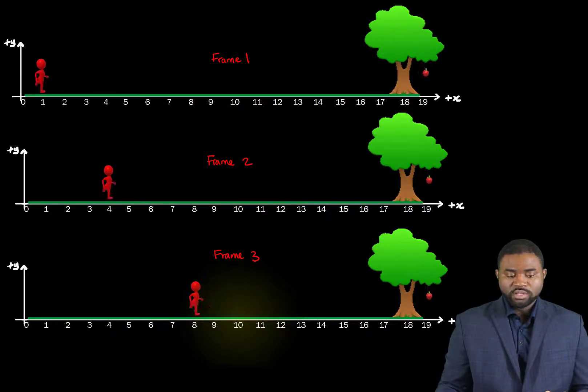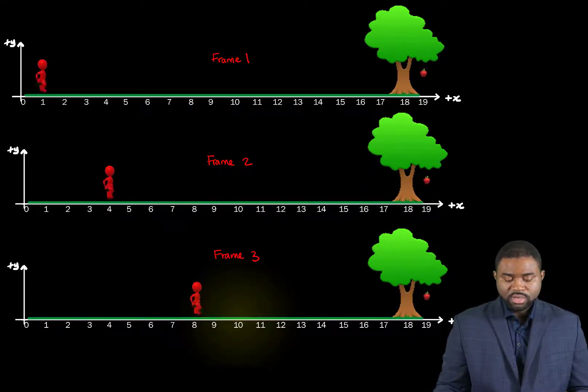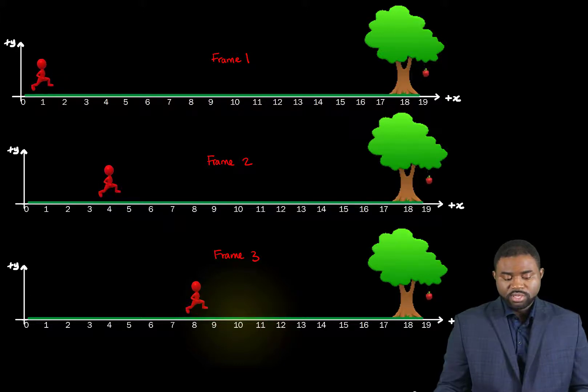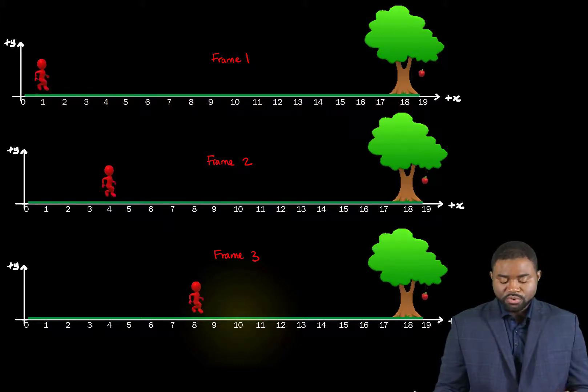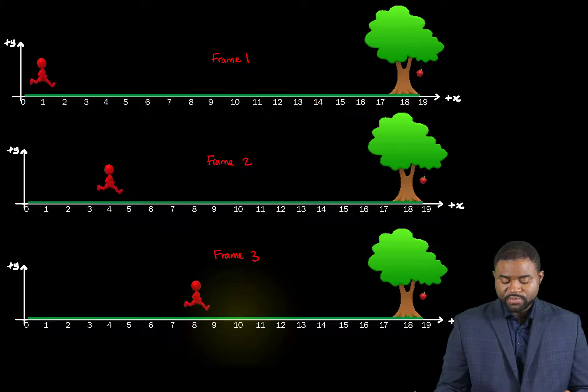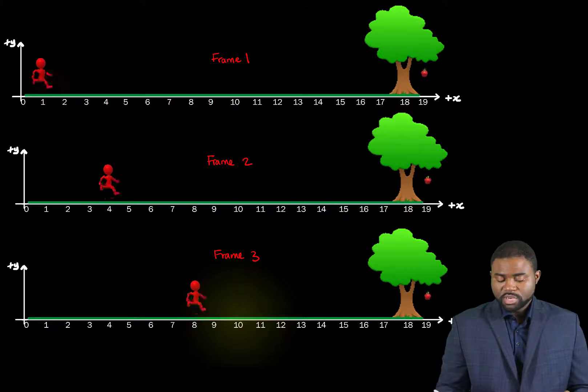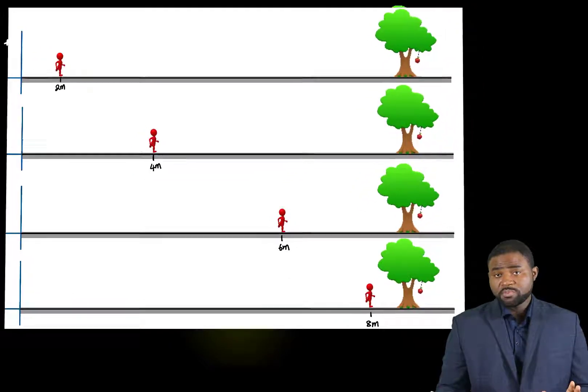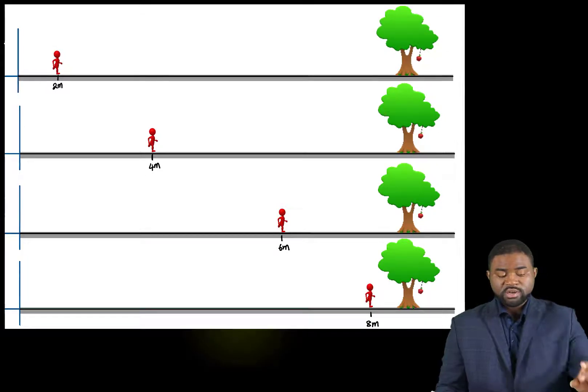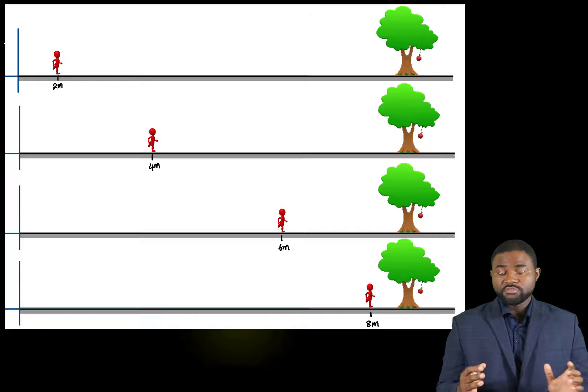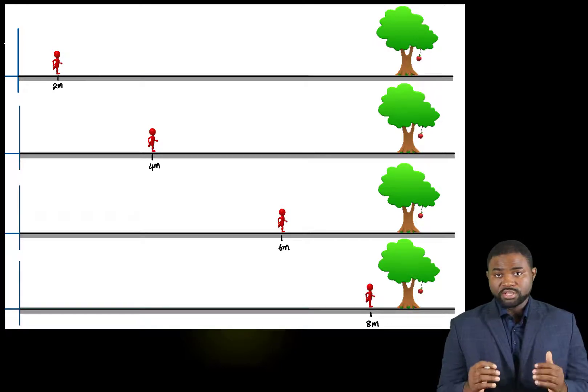In frame one, he is still at his initial position. In frame two, he is at position four. In frame three, he is at position eight. Now keep in mind that these are different frames showing a snapshot of the running man at a particular point in time.